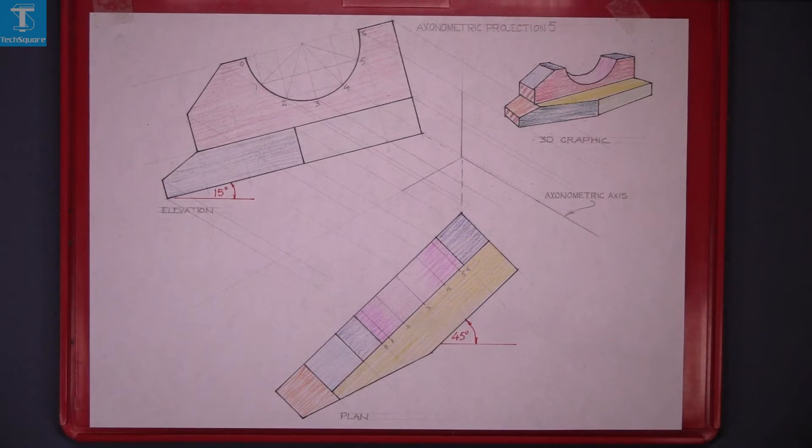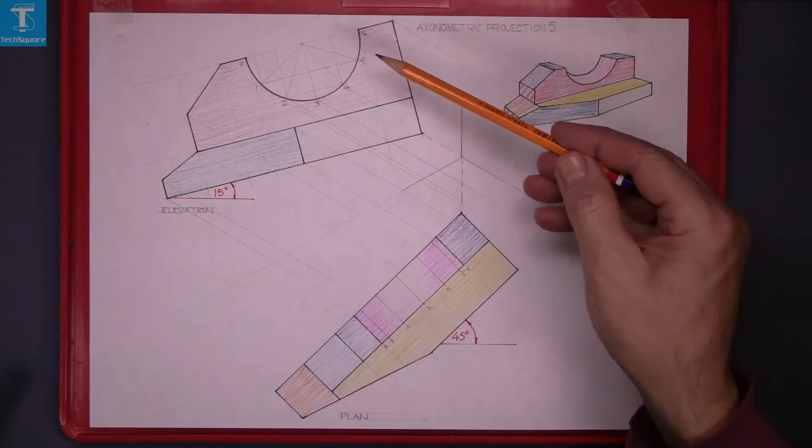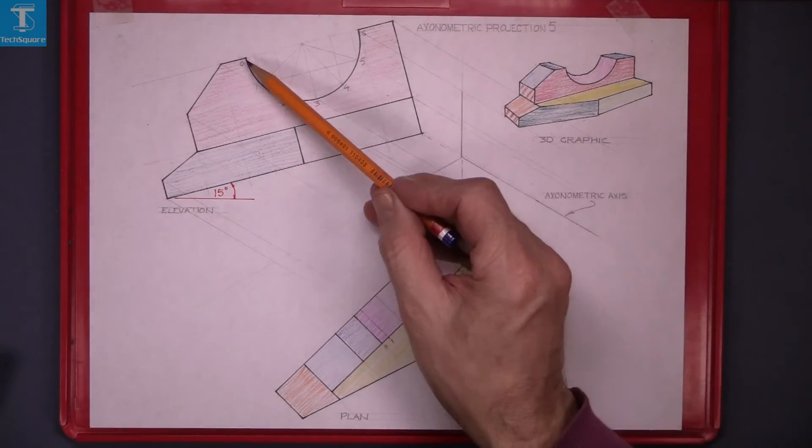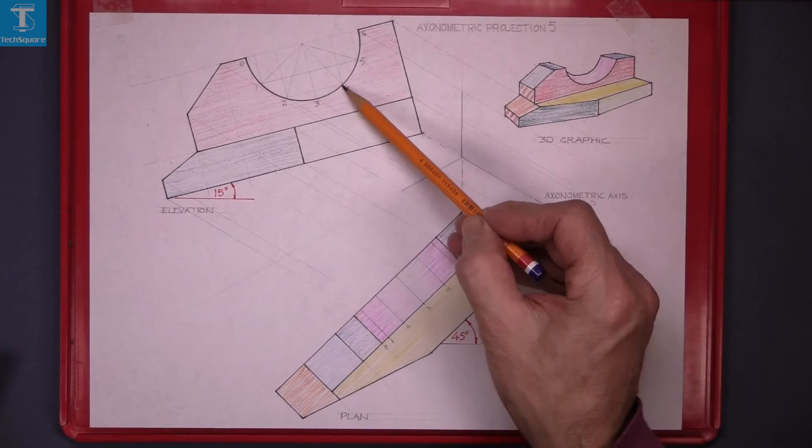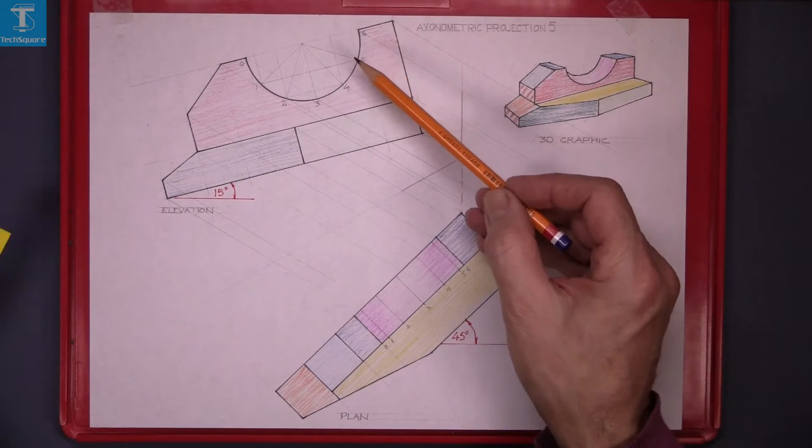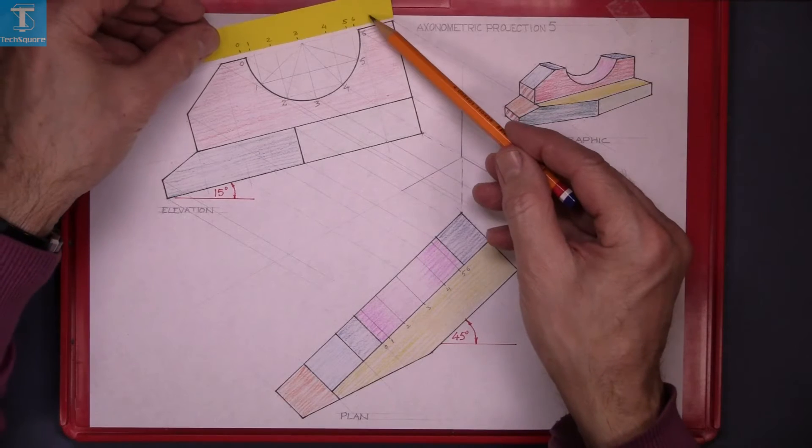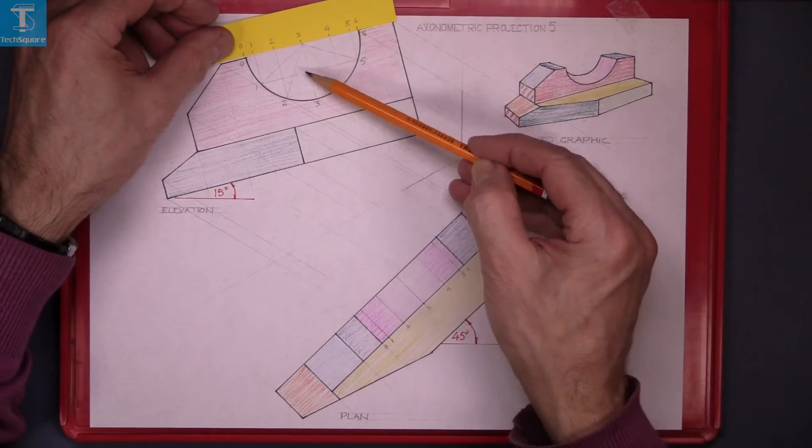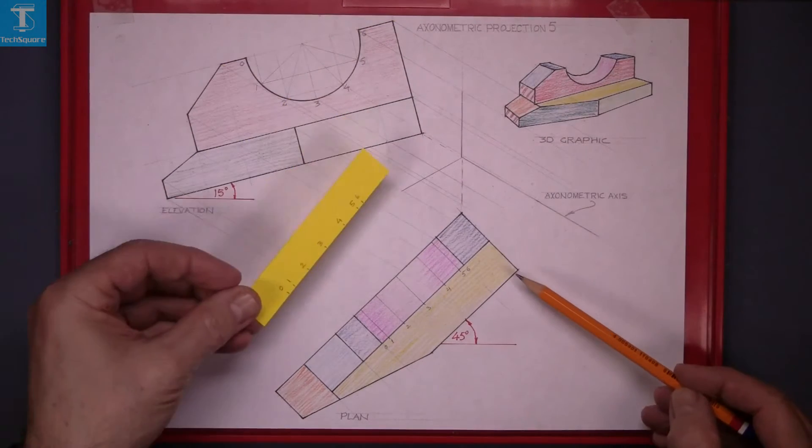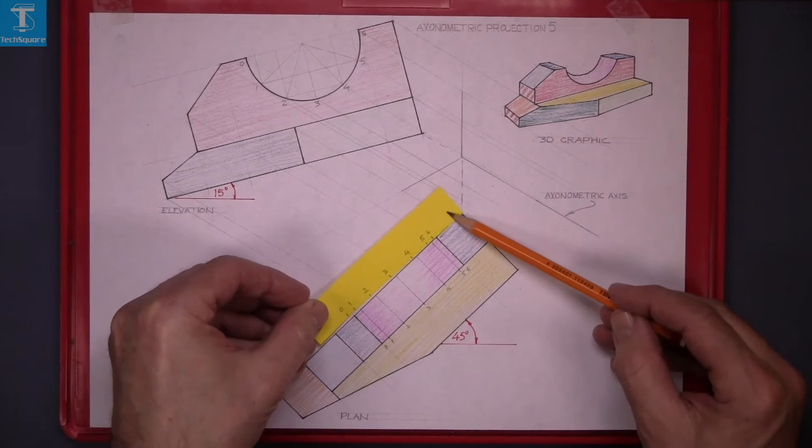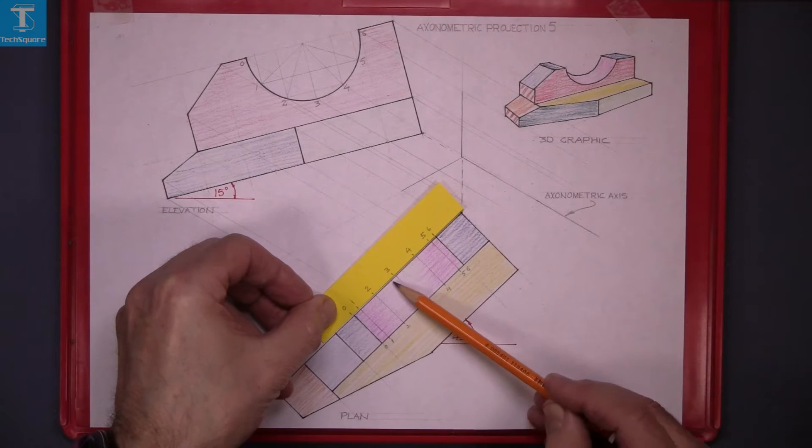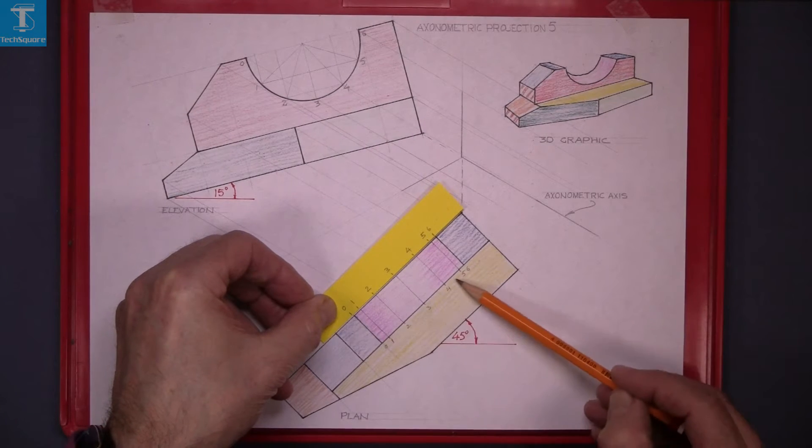Now the points on the circle, we've divided the circle into six equal parts and numbered them 1, 2, 3, 4, 5 and 6. Using this piece of paper, I've marked the points on the paper and transferred those points down to the plan and marked them along and numbered them.